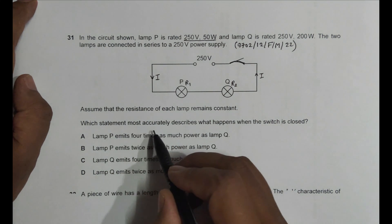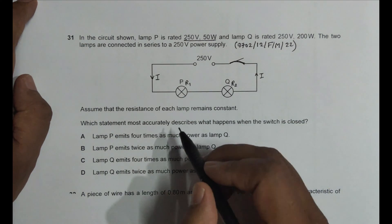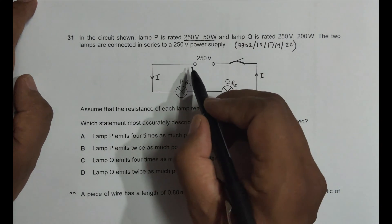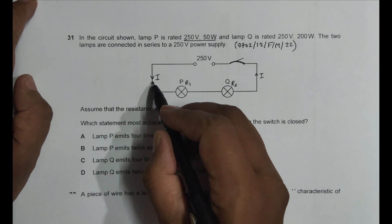Which statement most accurately describes what happens when the switch is closed? When this is closed, we have to investigate what happens. When the switch is closed, current flows and this current has to be found.